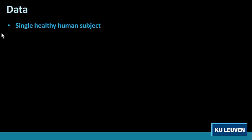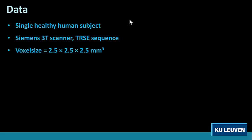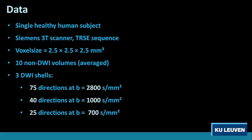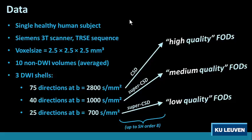Let's try this on some data. We have our average single healthy human subject, put in a scanner at 3 Tesla with a TRSE sequence and normal voxel size of 2.5 mm isotropic. We acquired 10 non-diffusion weighted imaging volumes which we averaged, and then three different shells — each next shell has a lower B value, so less angular contrast and also less angular resolution. We regard these as three separate data sets and perform CSD or super-CSD up to order 8, yielding high, medium, and potentially low quality FODs.